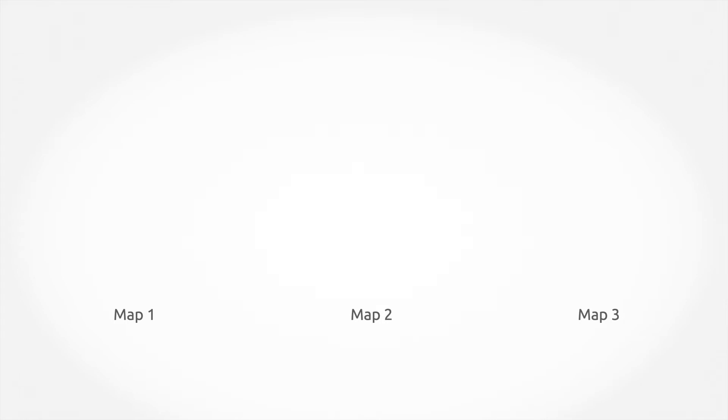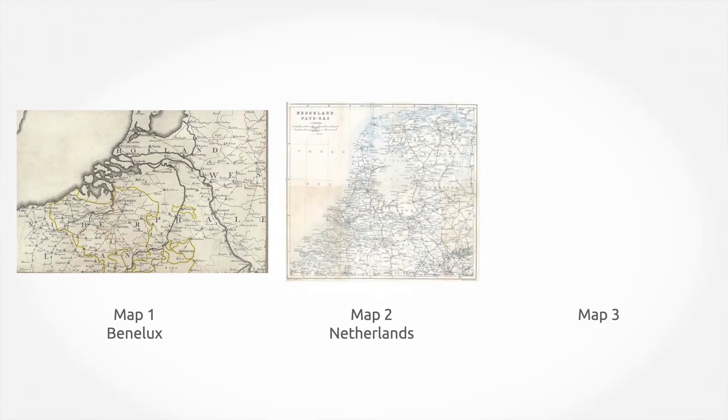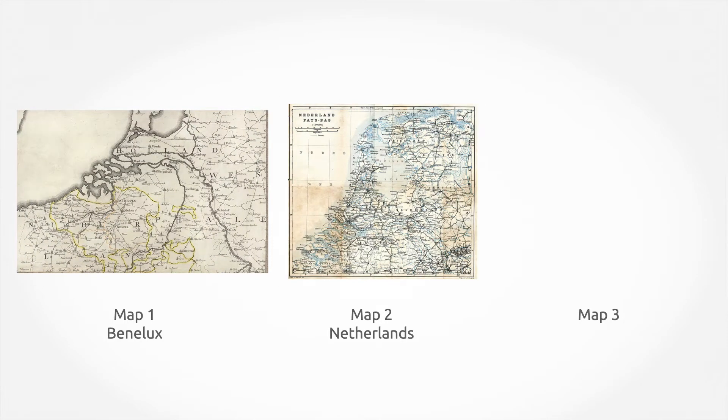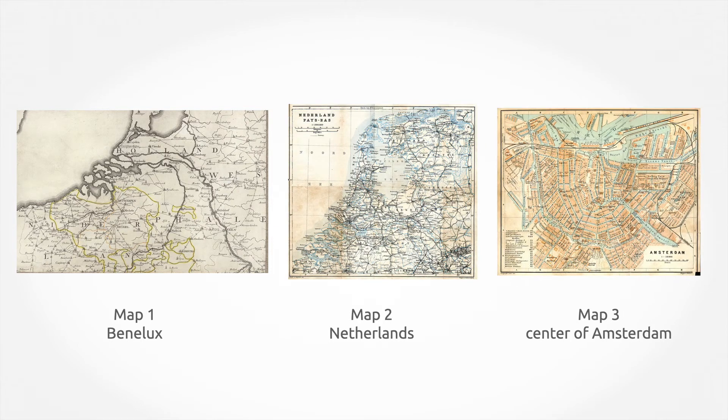In this tutorial, we will show three different maps. The first shows Benelux, the second shows the Netherlands, and the third one shows just the center of Amsterdam.